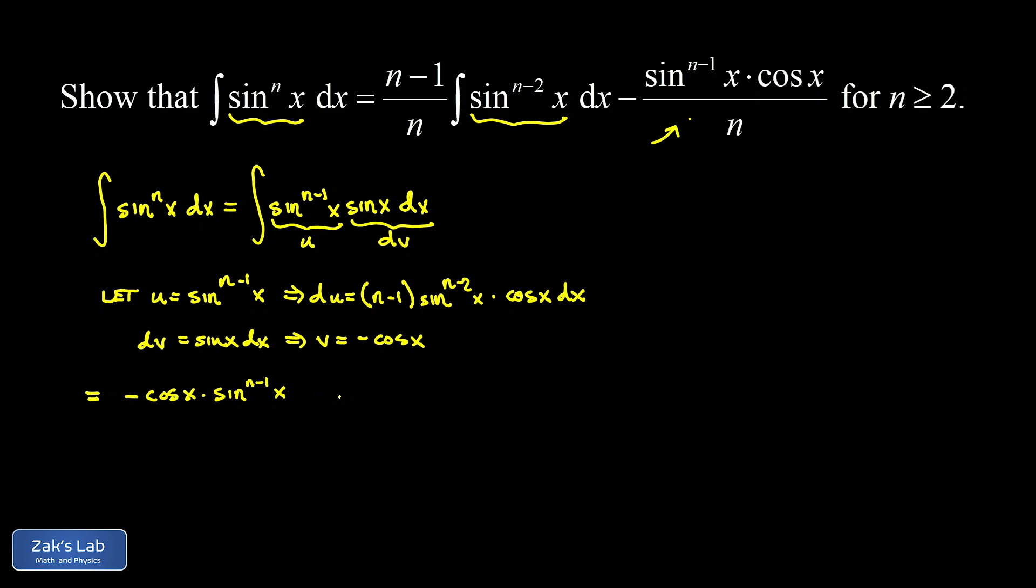The second part of the integration by parts formula is that I have to subtract the integral of v du. Well, v carries a minus sign already, so I end up with a plus. When I multiply du by v, I end up with a cosine squared there. Then du carries this constant factor of n minus 1 that I can move out in front. And I have a sine to the n minus 2 x, and then I have a cosine squared x.